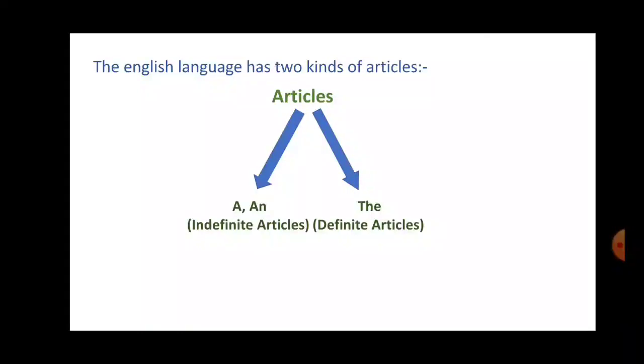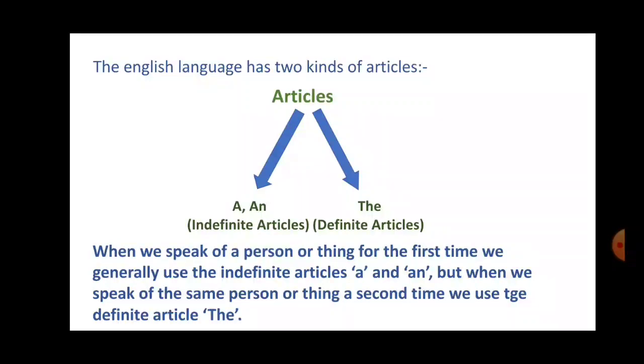So basically articles are a, an, and the. Now when we speak of a person or thing for the first time, we generally use the indefinite articles, that is a and an.